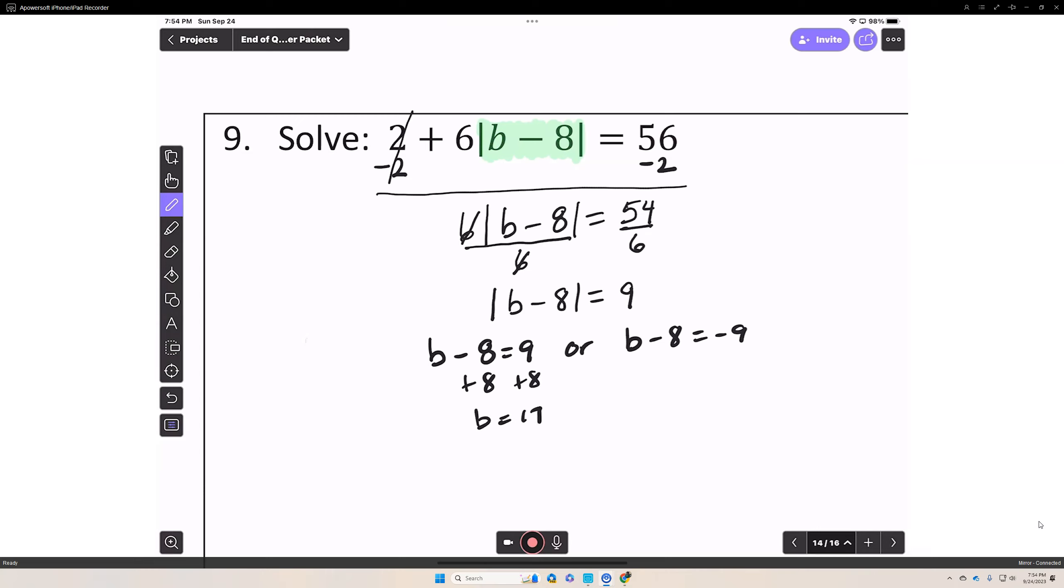And then on the right side, you add 8 to both sides. So you have b equals negative 1.